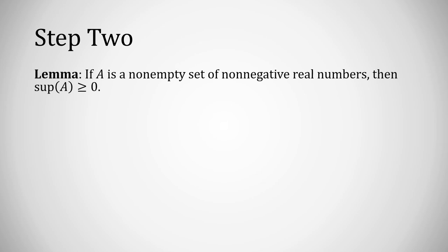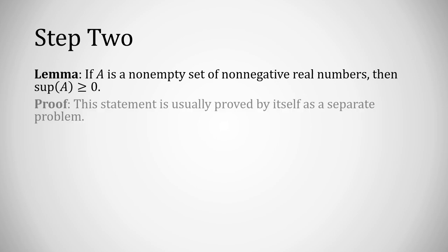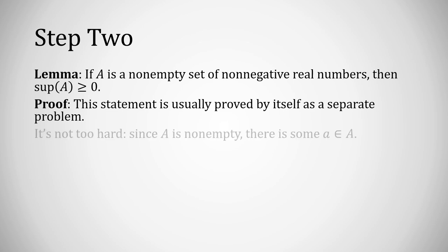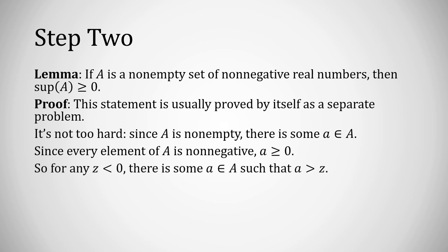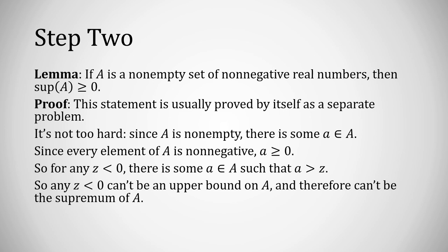Step two: suppose A is a non-empty set of non-negative real numbers; then its supremum is greater than or equal to zero. The set A is non-empty so it has an element, and every element is non-negative. Therefore any negative number has an element of A bigger than it, so no negative number can be an upper bound or the supremum. Therefore the supremum must be bigger than or equal to zero.